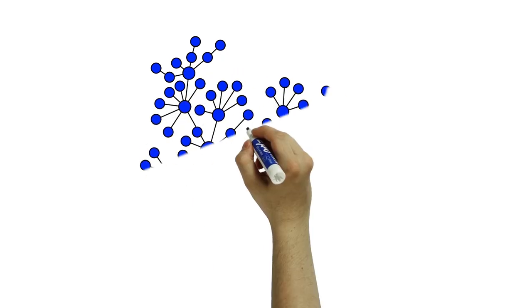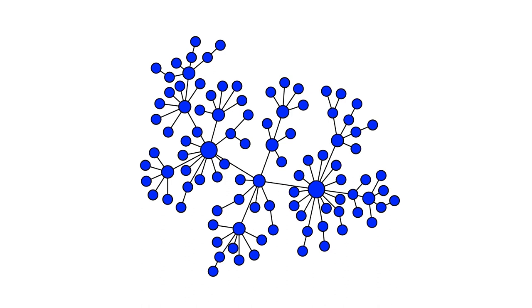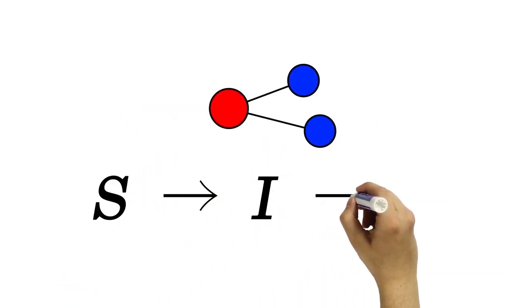Modeling epidemic dynamics depends on many biological factors, as well as human interaction networks and mobility dynamics. We use the SIR spreading model.